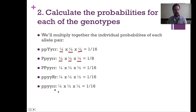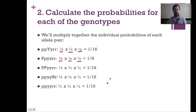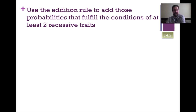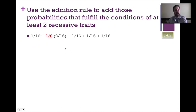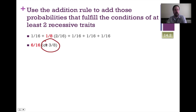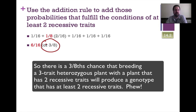Now we've figured out the probabilities of each individual genotype, but the question asks for the overall probability. We go past the multiplication rule and apply the addition rule, adding up these five fractions. Converting one-eighth to two-sixteenths, we add all five: two-sixteenths plus four one-sixteenths equals six-sixteenths, or reduced to three-eighths probability of getting at least two recessive traits out of three possible. Sometimes there are multiple ways to get certain allelic combinations, and that's where the addition rule comes into play.